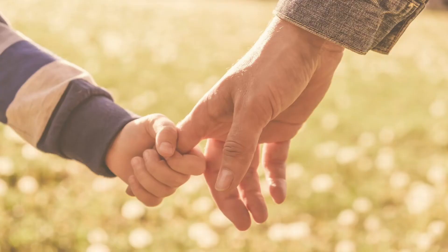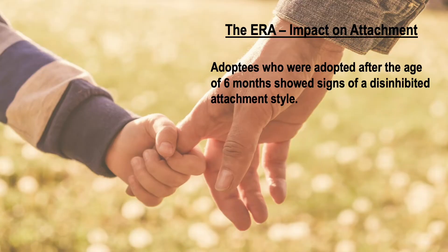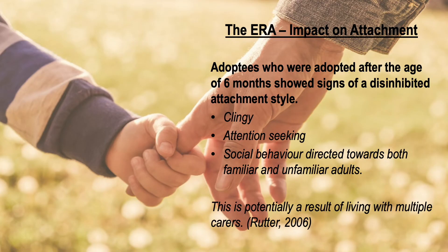Rutter also found clear attachment issues specifically in children adopted after the age of six months. These children showed signs of a disinhibited attachment style, with behaviours including clinginess, attention-seeking, and social behaviour directed indiscriminately towards both familiar and unfamiliar adults. This could potentially be a result of living with multiple carers over a long period of time and needing to try and build a bond with each of them.